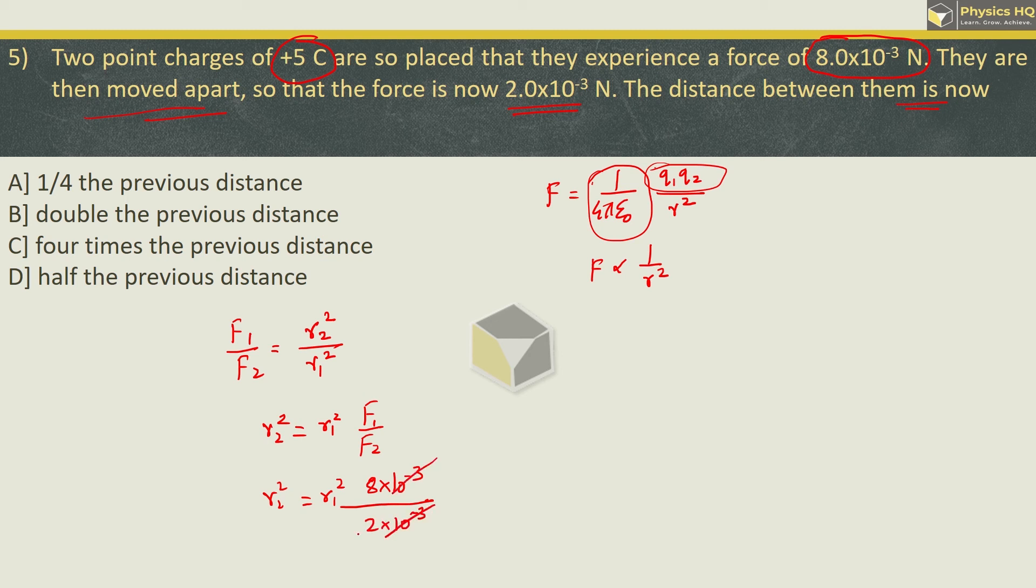So we can write r2 square equals r1 square into F1 upon F2. So we got r1 square into F1 is 8 into 10 raised to minus 3 divided by F2 is 2 into 10 raised to minus 3. This cancels out - 2 force, 8. So what we have is the distance in the second case squared is distance in first case squared into 4. When you take square root, distance in the second case is twice the distance in the first case. So the correct option is option B. The distance between them now is double the previous one. Hope you all understood this.